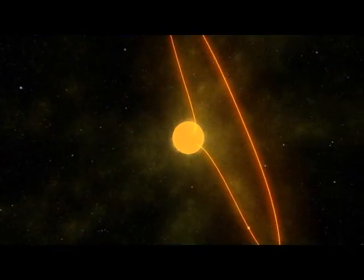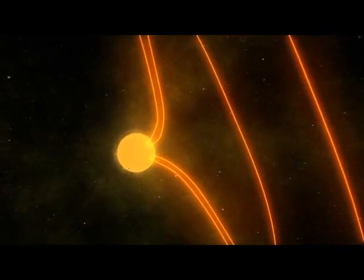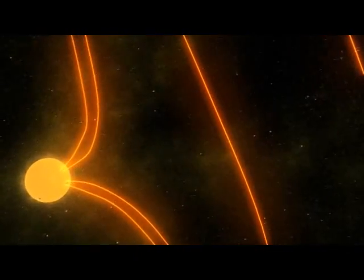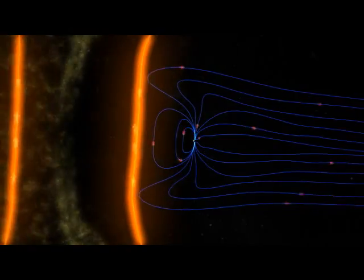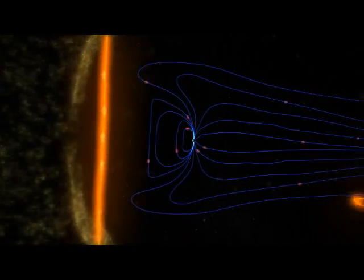In the past, researchers found that energy from the sun gets into Earth's magnetic field during periods when the sun's magnetic field points southward. Here we found that the particles, the plasma, the particles from the sun get into Earth's magnetic field when the sun's magnetic field points northward.